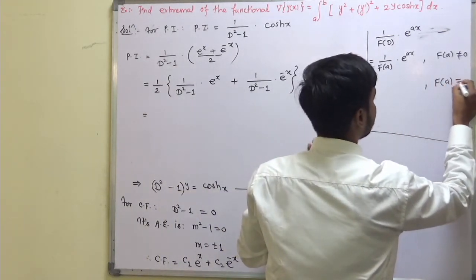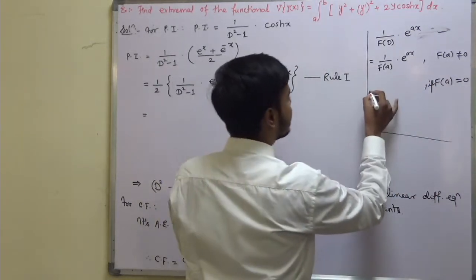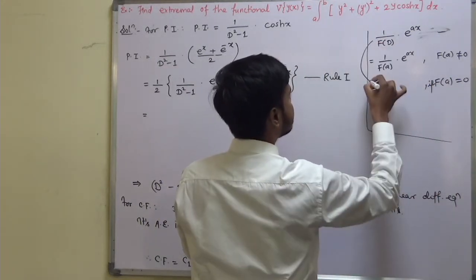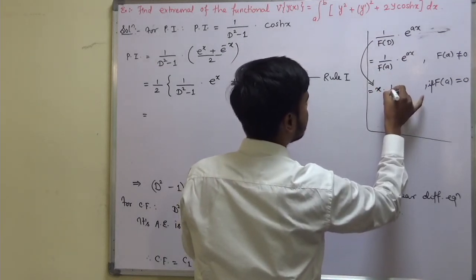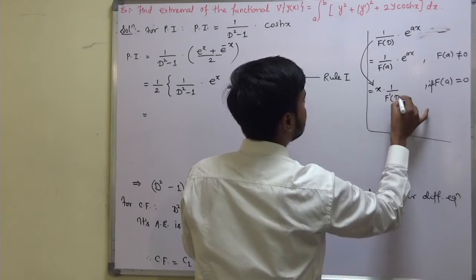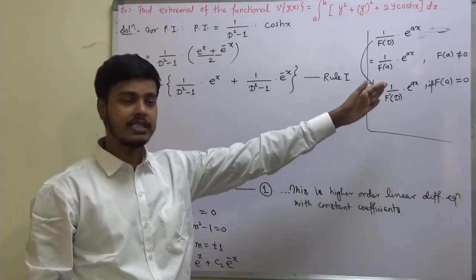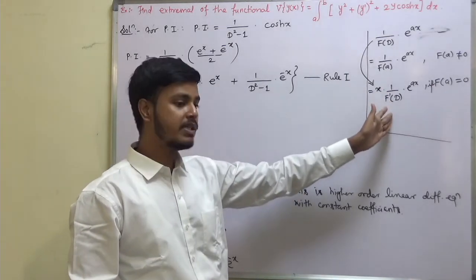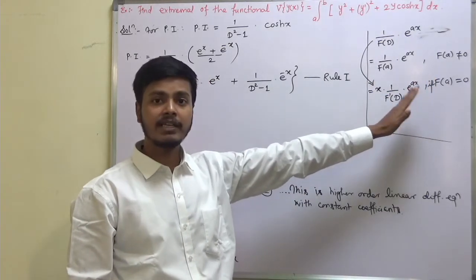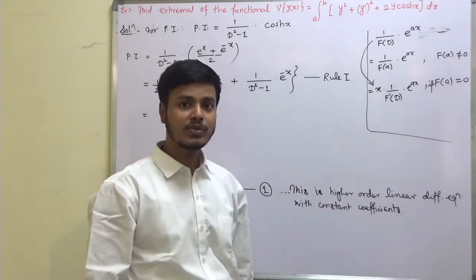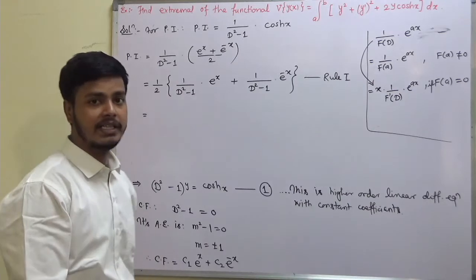But if f(a) equals zero, we multiply the numerator by x and differentiate the denominator with respect to D, keeping the function as is, then substitute D equal to a again. If still zero, repeat until a non-zero value is obtained.